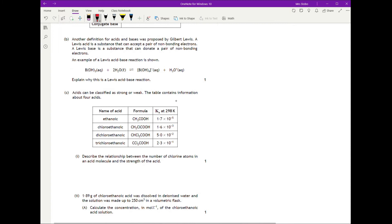Another definition for acids and bases was proposed by Gilbert Lewis. A Lewis acid is a substance that can accept a pair of non-bonding electrons, and a Lewis base is a substance that can donate a pair of non-bonding electrons. An example of a Lewis acid base reaction is shown. Explain why it's a Lewis acid base reaction.